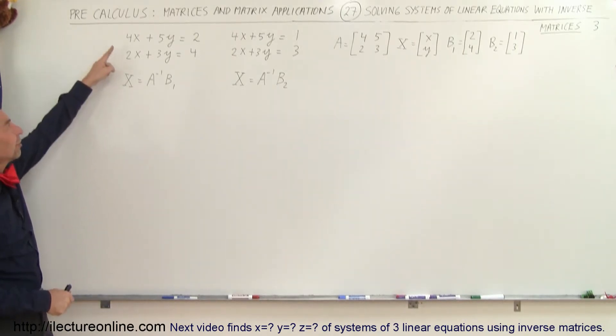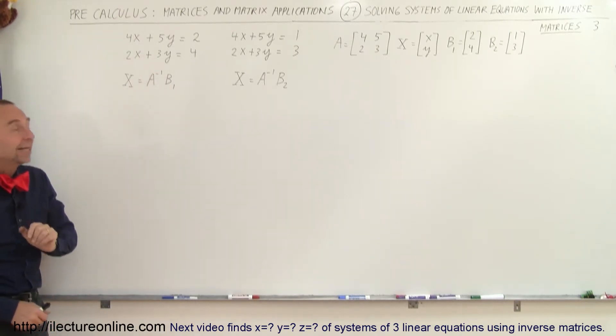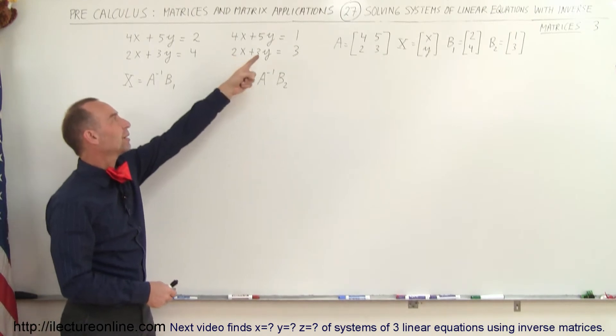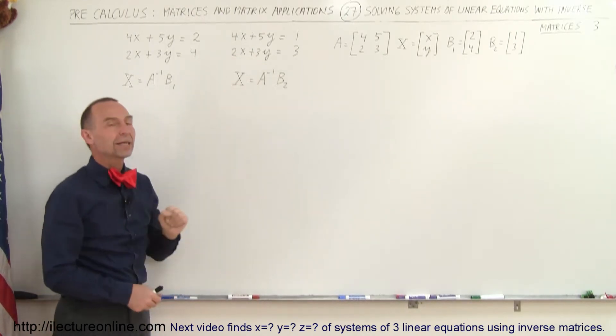For example, here's set number one that says 4x plus 5y equals 2 and 2x plus 3y equals 4. And here's a second set where we have 4x plus 5y equals 1 and 2x plus 3y equals 3.